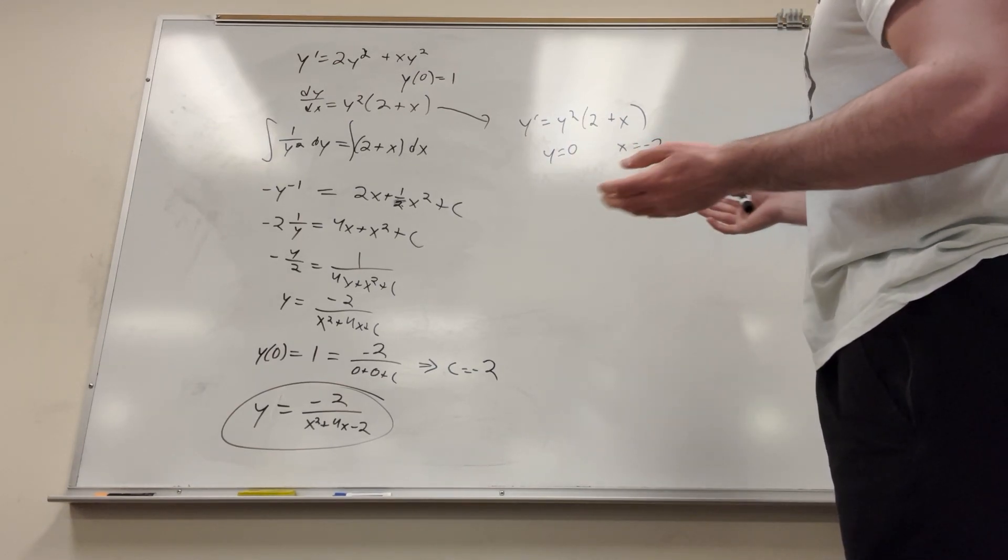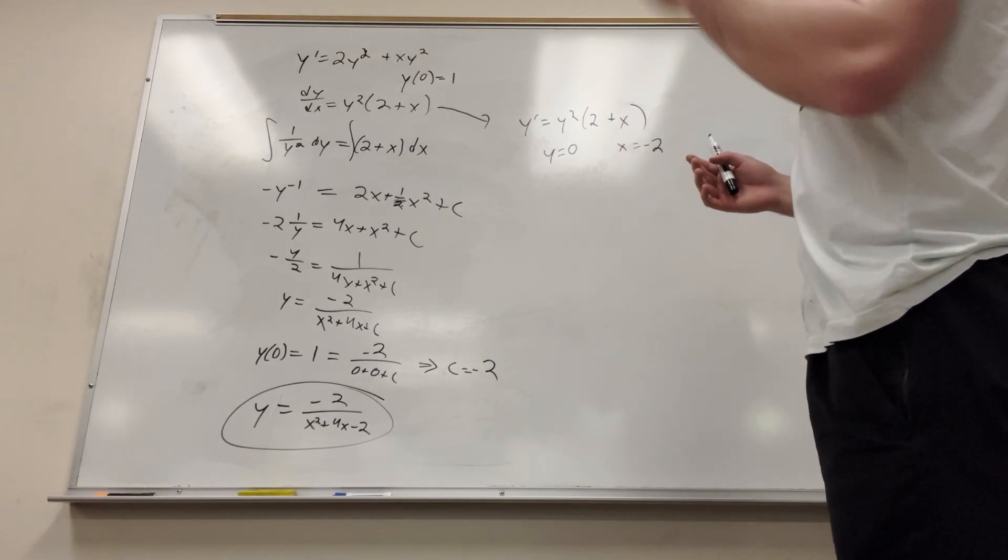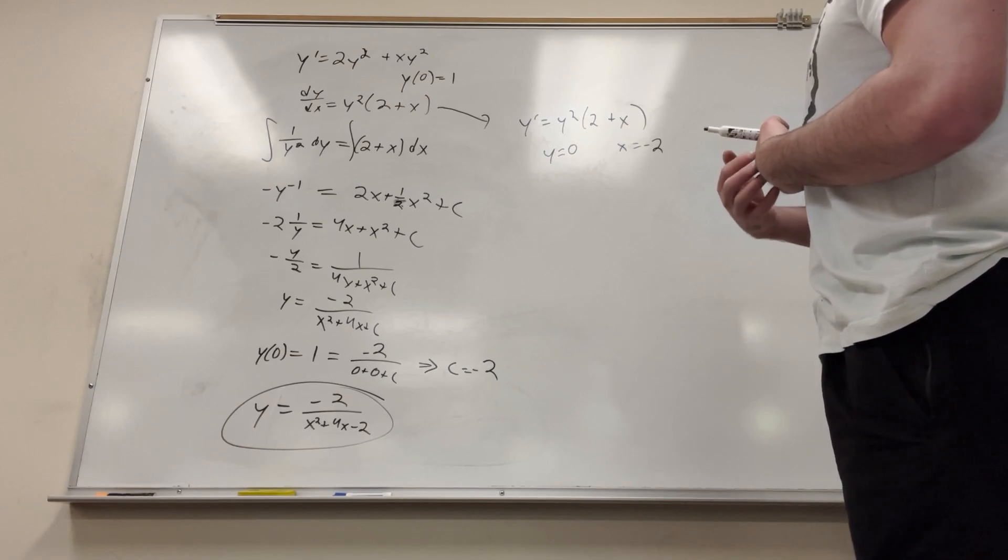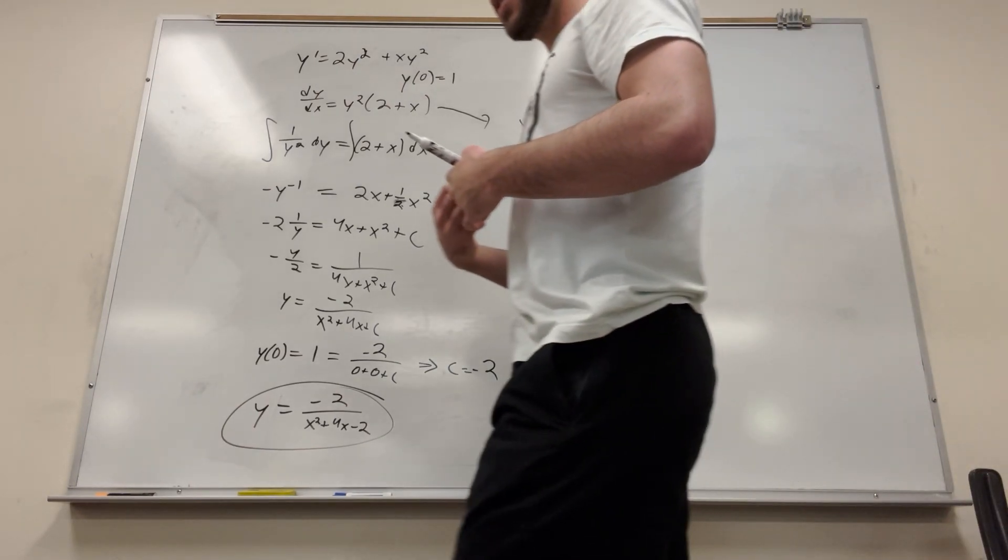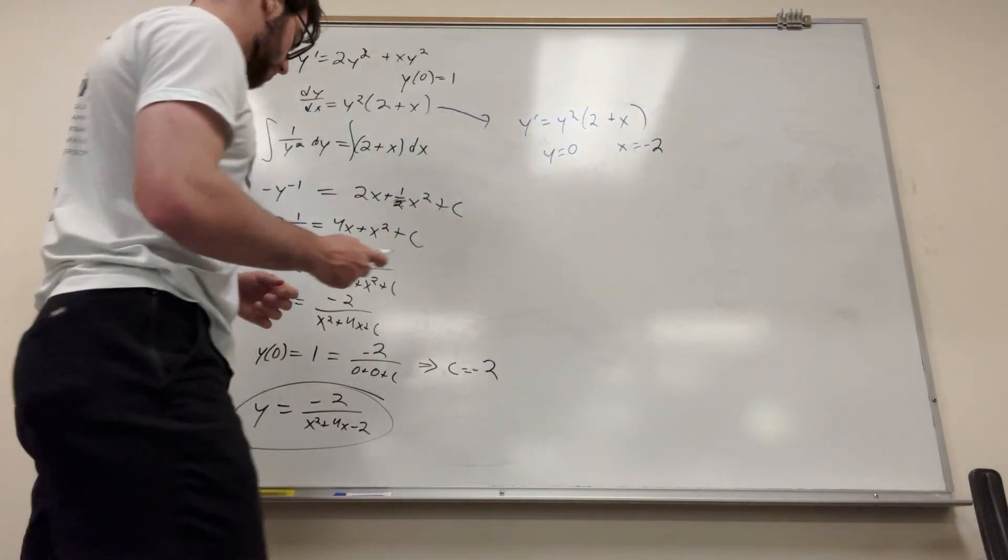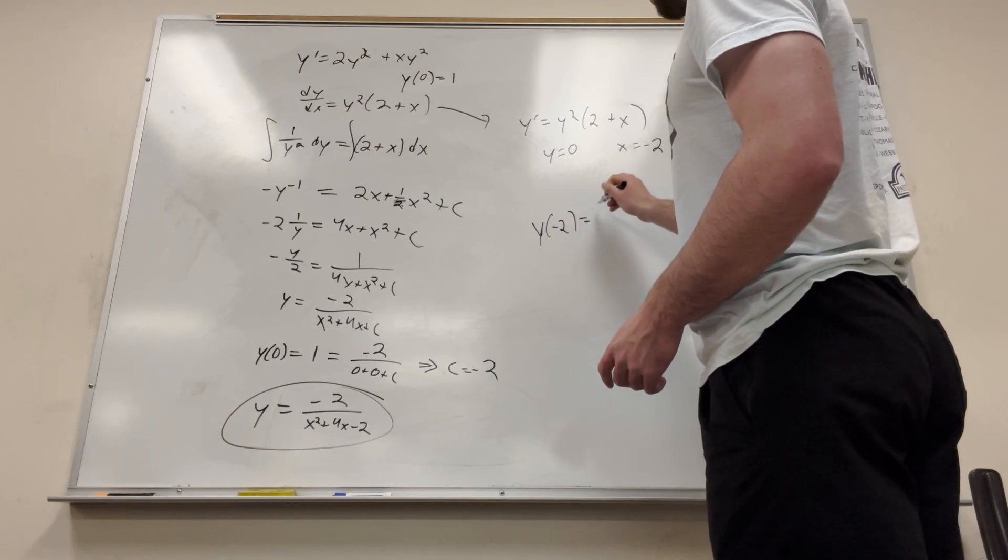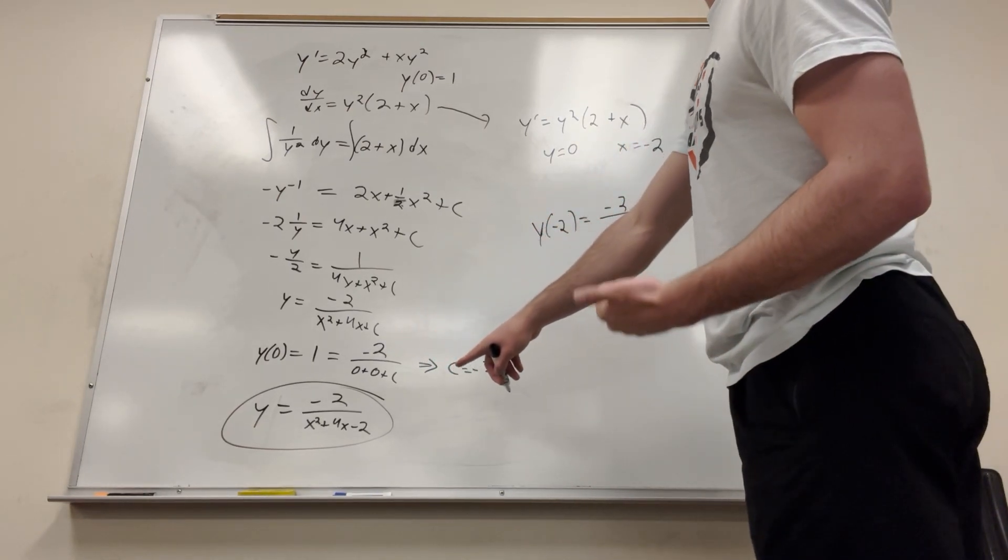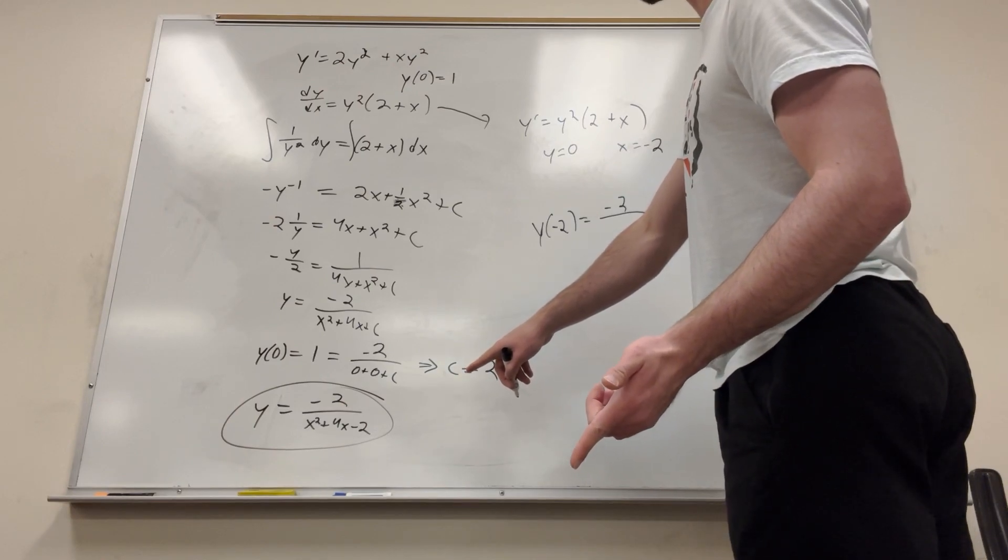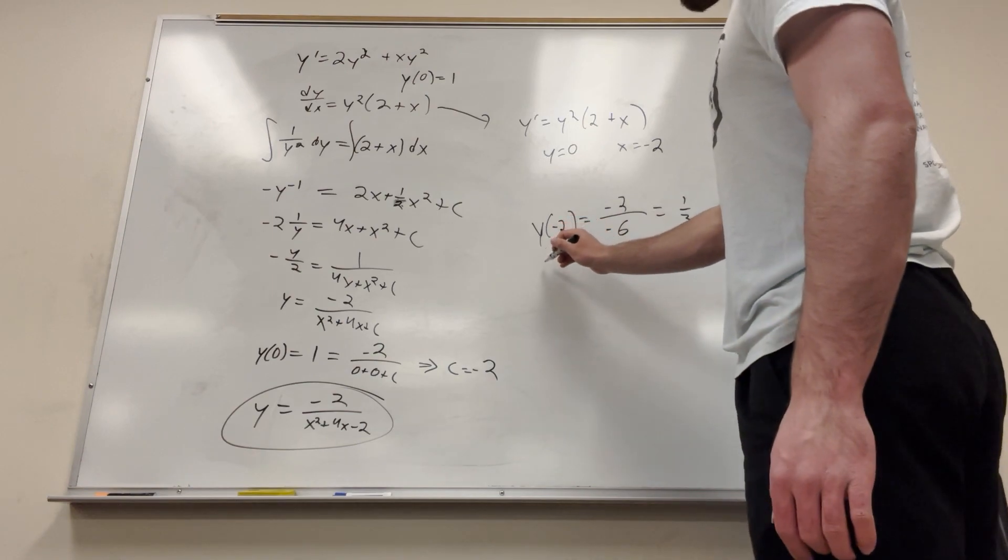But then x is equal to negative 2. x is equal to negative 2 is going to be some sort of slope thing. What is it going to be? I don't really want to take the second derivative of this. So we can kind of just figure it out by plugging in numbers. All right, so let's do negative 2. Y is negative 2. We'll do negative 2 over, so it'll be 4 minus 8. So 4 minus 8, negative 4, minus 6. So it'll be 1 third is where that's at.